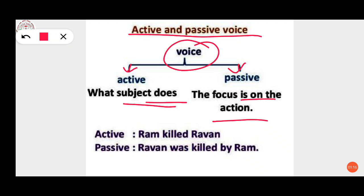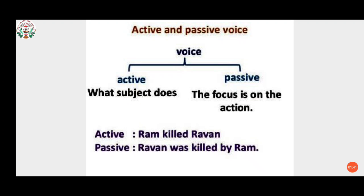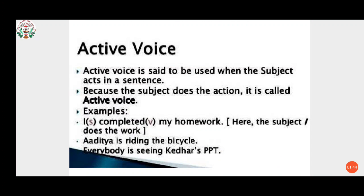Now let's see the examples. An example is given for active voice and how we can change it to passive voice. The active voice example is: 'Ram killed Ravan.' In passive voice, this is changed to: 'Ravan was killed by Ram.'